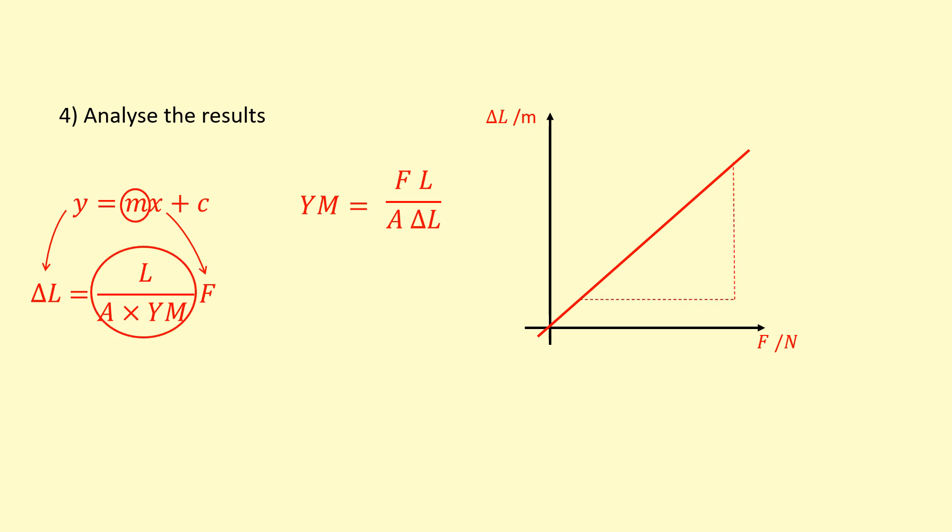The gradient here is going to be length over cross-section area, which you would determine using your diameter, times Young's modulus. So therefore Young's modulus will equal length over cross-section area times gradient.